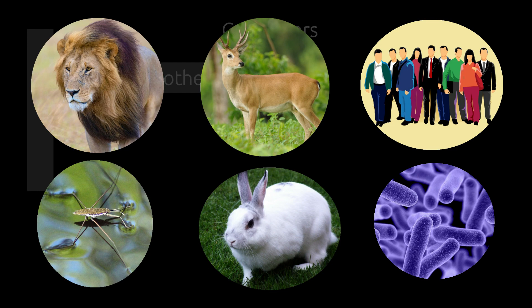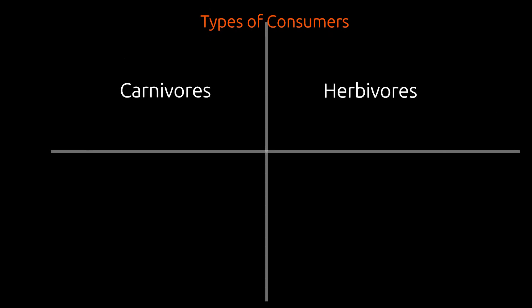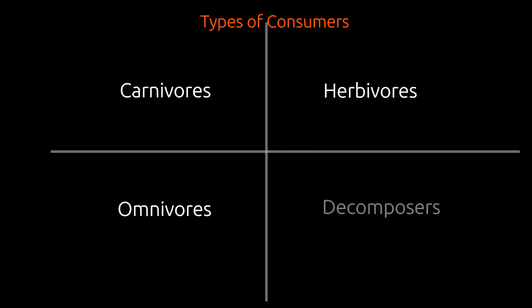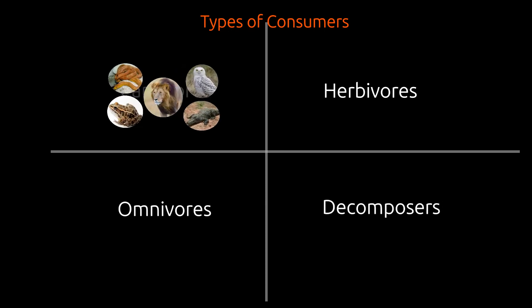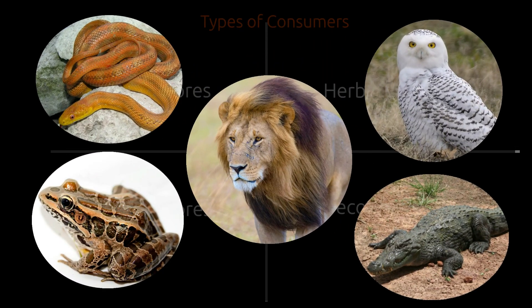Based on type of food, consumers are further divided into four categories: 1. Carnivores, 2. Herbivores, 3. Omnivores, 4. Decomposers.